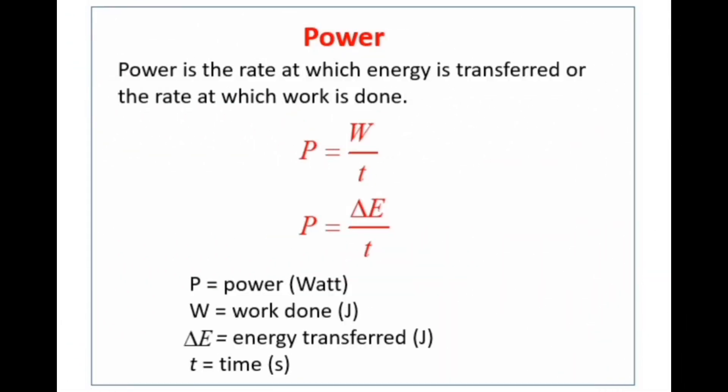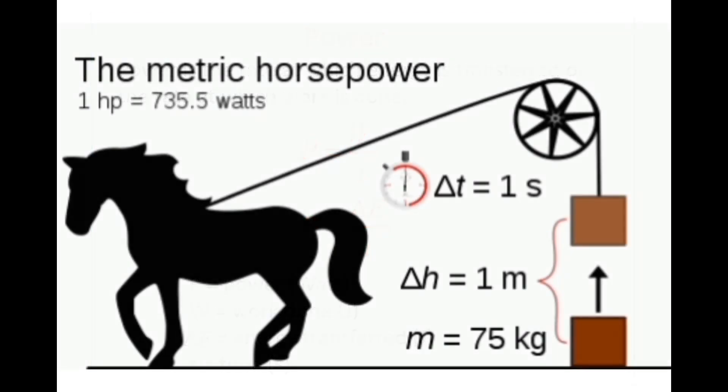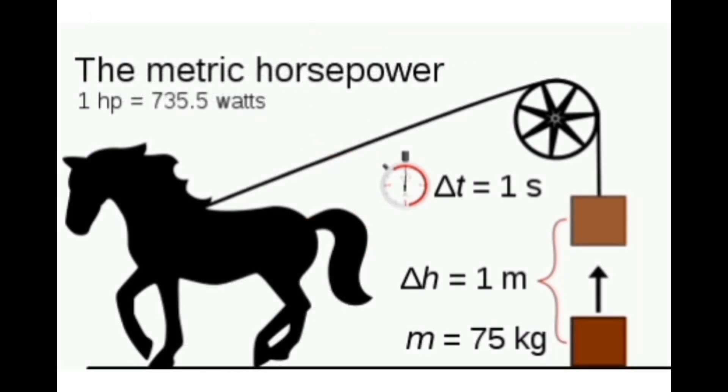Power is the rate at which energy is transferred, or the rate at which work is done. The formula for power is P = W / t.